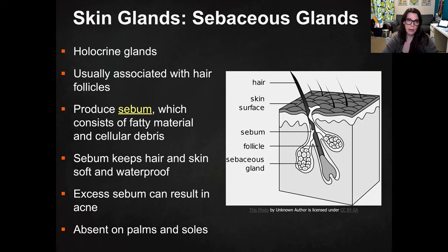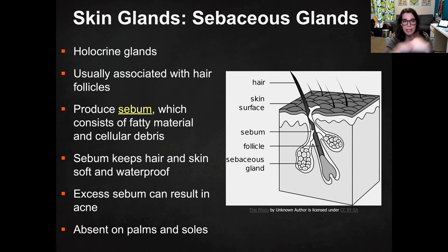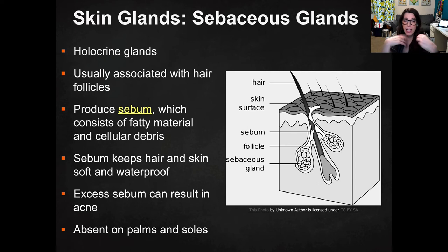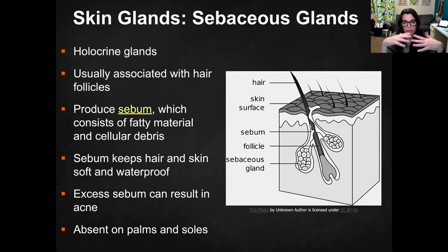The next accessory structure is the skin glands. Starting with the sebaceous glands, also sometimes referred to as holocrine glands — they're usually associated with hair follicles, normally just off the sides of hair follicles. They produce sebum, which is a fatty material, along with cellular debris. Sebum coats the hair and gets on the skin, helping to moisturize, keep the skin soft, and make it waterproof. However, excess sebum can become oily and waxy, resulting in acne or very oily hair. Because there are no hair follicles on your palms or soles of your feet, there are also no sebaceous glands there.